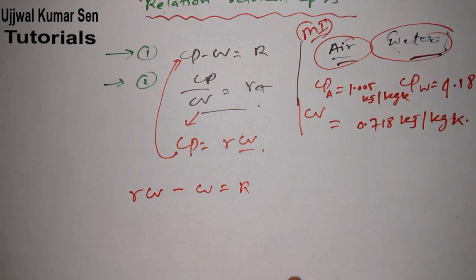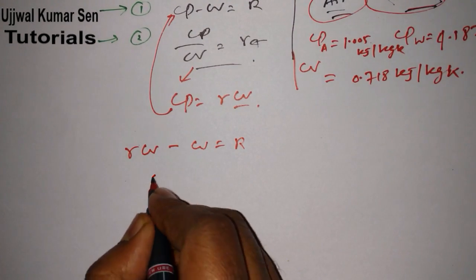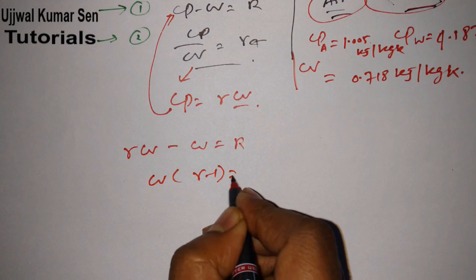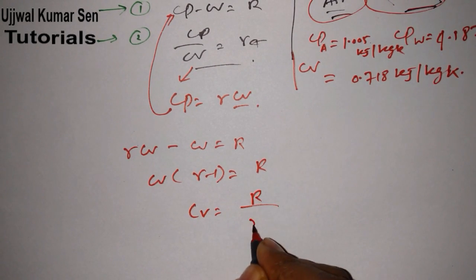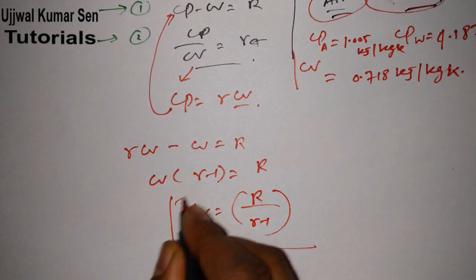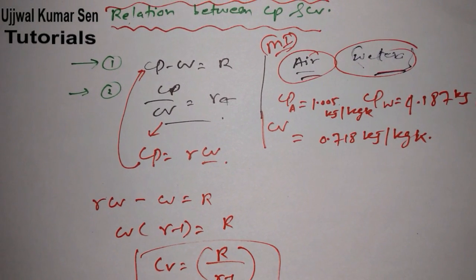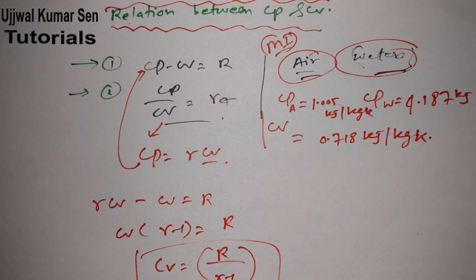What we get is gamma CV minus CV is equal to R. Now take common CV from here: gamma minus 1 is equal to R. Therefore we can write CV is equal to R by gamma minus 1.